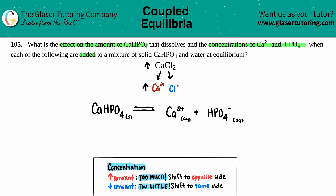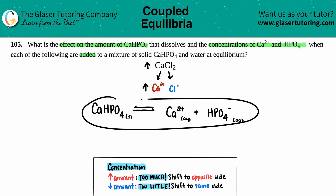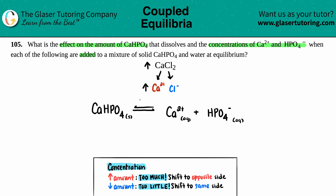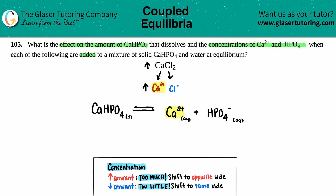Now how does this get translated to the equilibrium? Well, maybe there's an ion that matches. In this case, we do have a matching ion — calcium 2+ from CaCl2 matches the Ca2+ product in our equilibrium. So if we're increasing CaCl2, we're increasing the amount of Ca2+, and that means Ca2+ will increase.